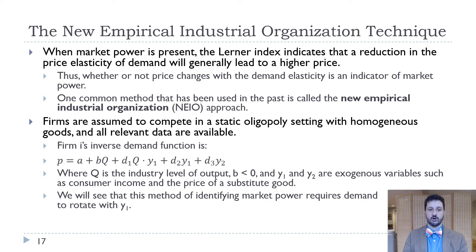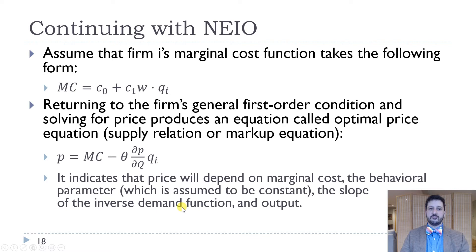The key here is that we have to have demand rotate or change with Y1. We would think that would be true for a normal good consumer income, for instance, goes up, we would expect demand to change as well. We're going to assume that the marginal cost function takes the following form: C0 plus C1W, where W is the input price, times QI. So this is an increasing marginal cost function.